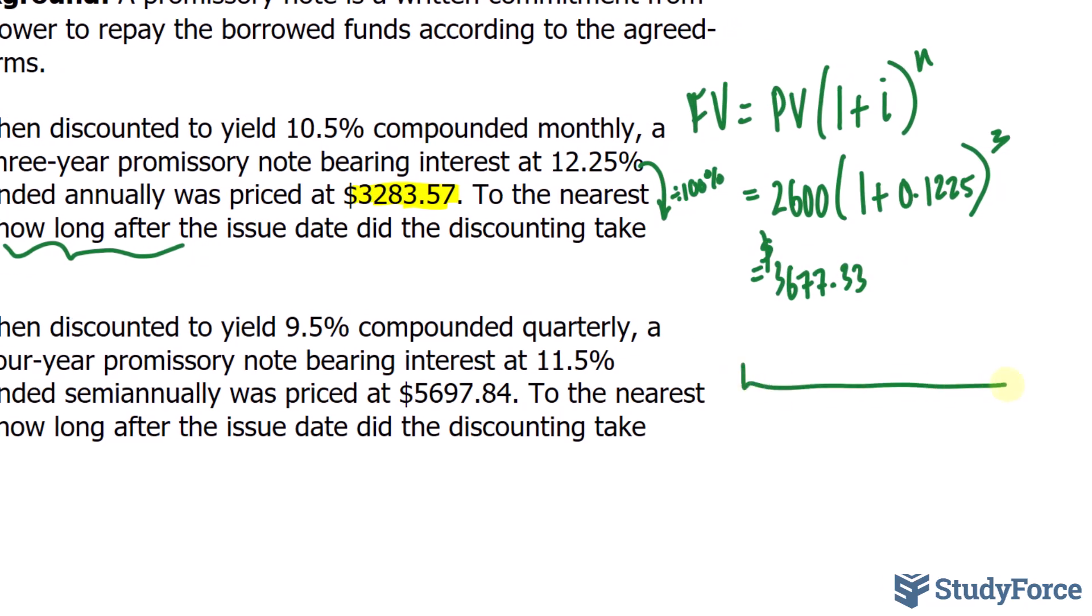So, if we look at this on a timeline, at 0 it was $2,600. It matured to, in three years, $3,677.33, and we're looking to discount this such that its value is $3,283.57.